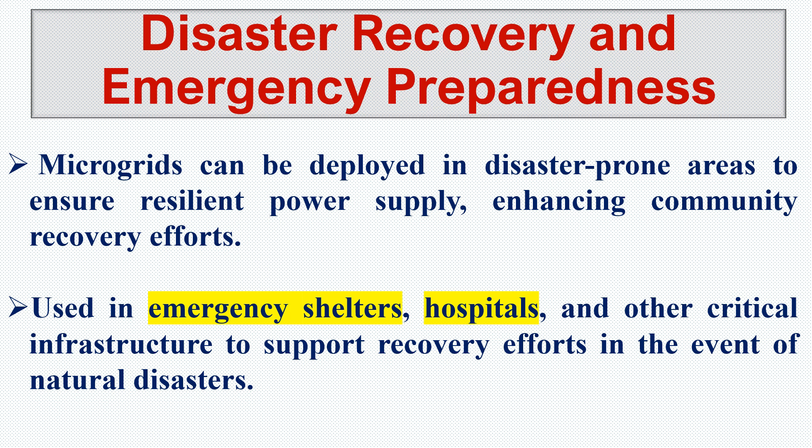Microgrids are used in emergency shelters, hospitals, and other critical infrastructure to support recovery efforts in the event of natural disasters. During these times, if we have our own battery backup with a simple solar power generation system or a small backup diesel generator, that's enough — we can supply our own load without depending on the grid, resulting in better energy management.